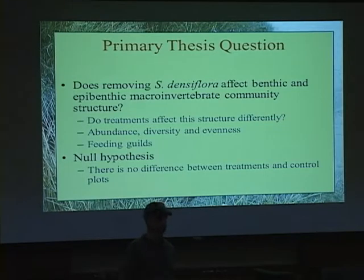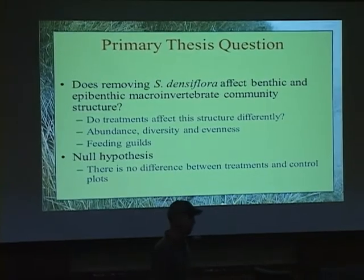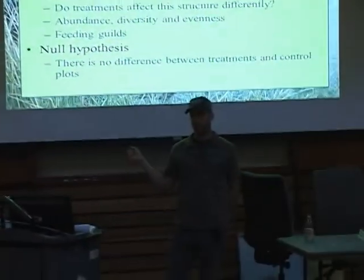I'm seeing whether taking Spartina out of the equation facilitates a different community of macroinvertebrates that's more abundant or less abundant — I would assume probably more, because right now it's looking pretty bleak. And seeing whether they're more diverse or more even. For a secondary question I'll be placing organisms into feeding guilds, organizing them by their method of feeding, which is pretty self-explanatory. The null hypothesis, of course, is there's no difference between treatments or control.